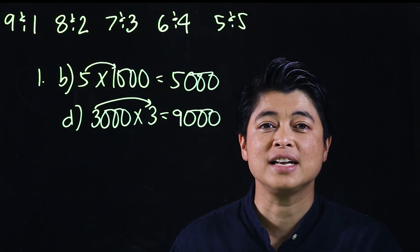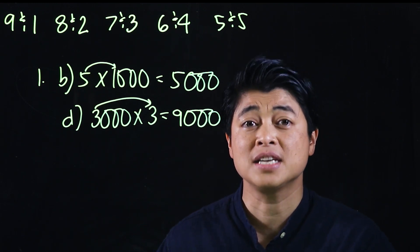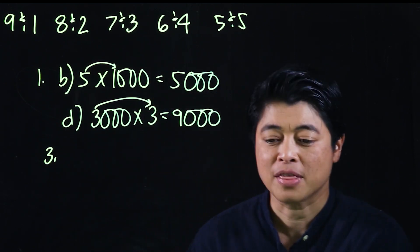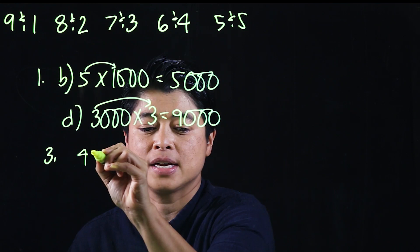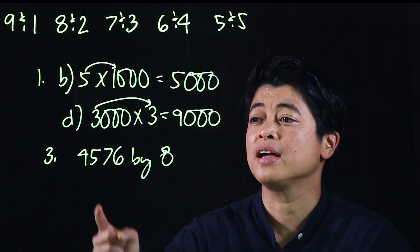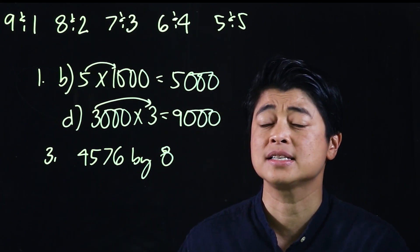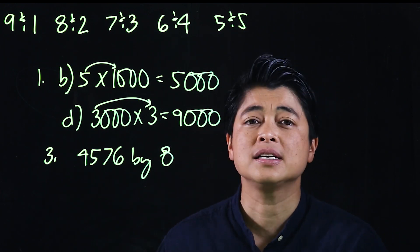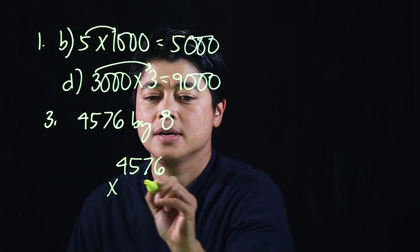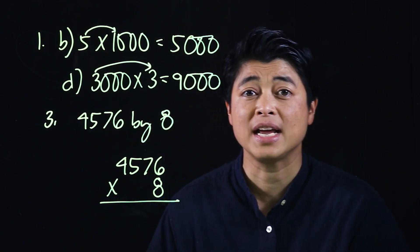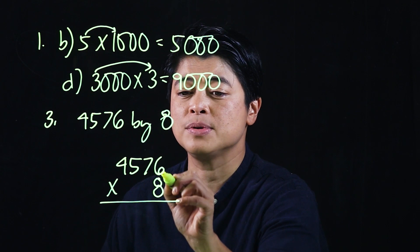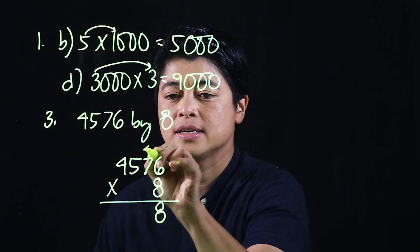For harder problems, isolate the numbers without zeros, then place the zeros at the end. Not all problems are like that though. Problem number three says to multiply four thousand five hundred and seventy-six by eight. We can't do that mentally, so we write it vertically in computational form. This was covered in Grade 3 — the only difference is the numbers are larger now.